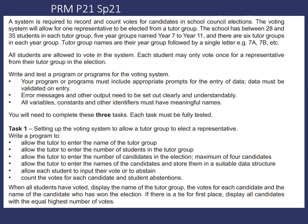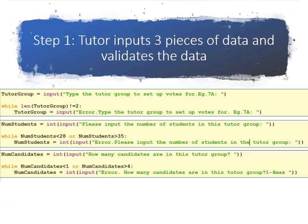So there are four inputs by the tutor. After that, we're going to allow each student to input their vote or to abstain from voting. We're going to count the votes for each candidate and count the student abstentions. When all the students have voted, we're going to display the name of the tutor group, the votes for each candidate, the name of the candidate who has won the election. If there's a tie for first place, we're going to display all the candidates with the equal highest number of votes.